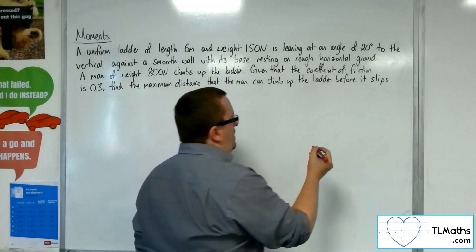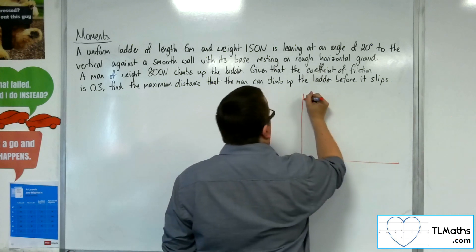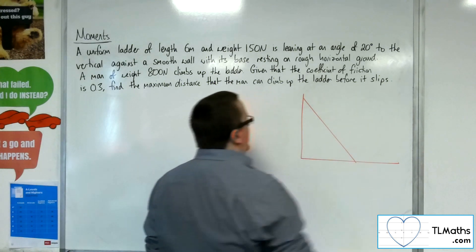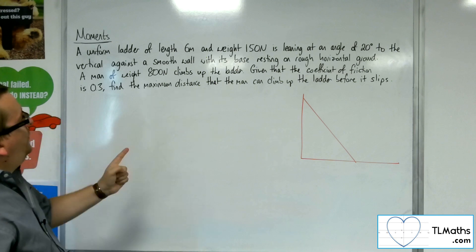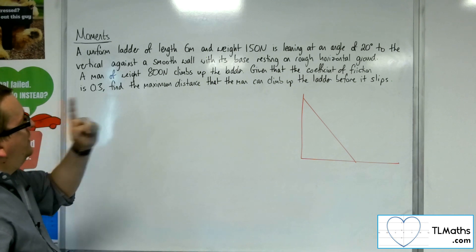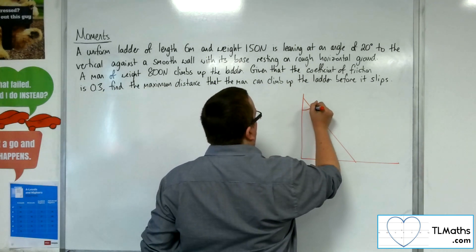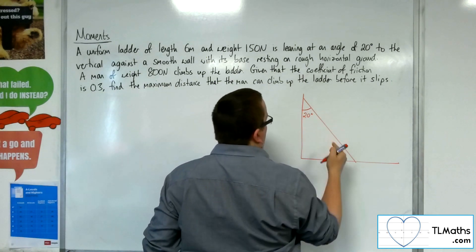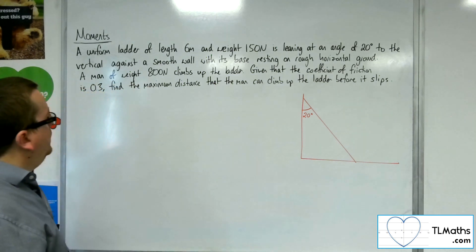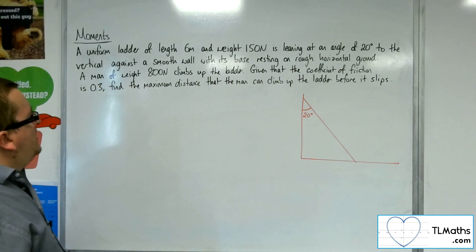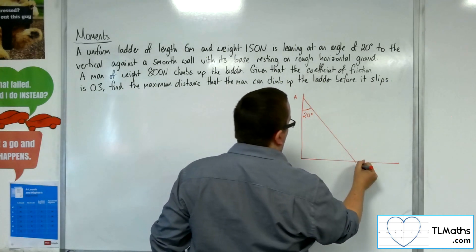Okay, so let's draw a diagram so we can see what's going on. All right, there's my ladder. So what I'm told is that this is a ladder that is leaning at an angle of 20 degrees to the vertical. So that is 20 degrees. Beware, that would be 20 degrees to the horizontal if it was that angle there. It's resting on rough horizontal ground. So let's call that point A and that point B.